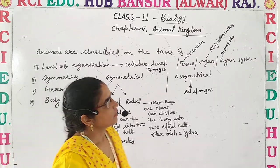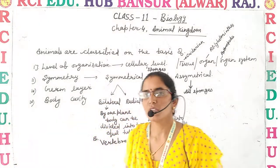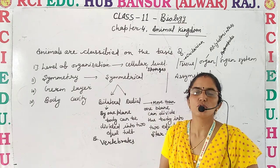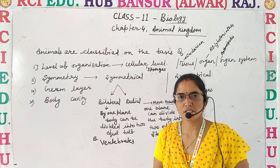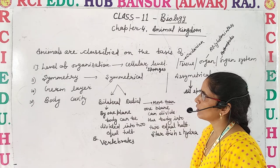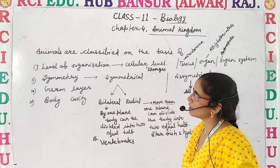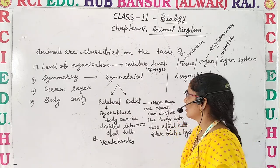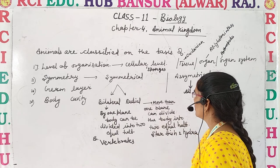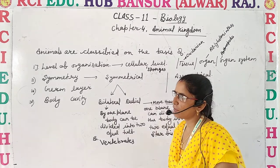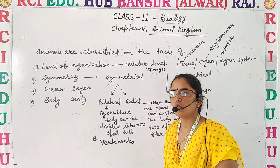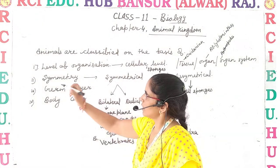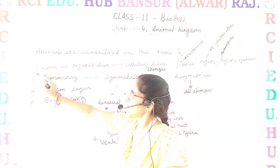As we know, a large number of animals are there — millions of species of animals have been described. Animals are classified on the basis of some systematic way. These animals are classified on four major classifications.